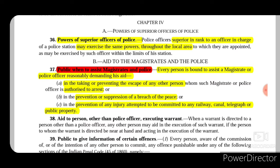Now Section 37 is very important — 'Public when to assist magistrates and police.' Section 37 talks about when the public will assist the magistrate and the police. It says that every person is bound to assist a magistrate or police officer reasonably demanding his aid. So if a magistrate or a police officer demands the aid or help of any person, then such person is bound to assist. When will a magistrate or police officer demand this help? In the taking or preventing the escape of any person — so if the police officer or magistrate wants to prevent the escape of any person by arresting him.